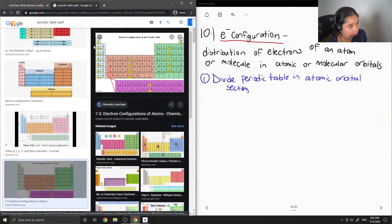Okay, so when we divide it into its sections, you kind of get four sections that look like this. The blue corresponds to the s orbital or the s block. The green corresponds to the p block. The orange is the d block. And the bottom two rows is the f block.